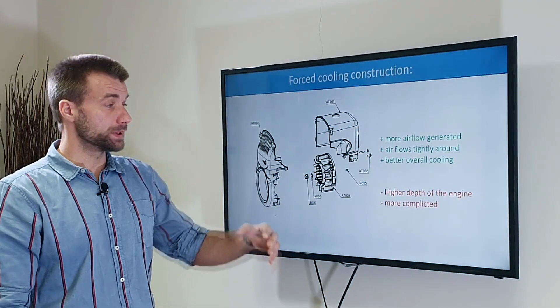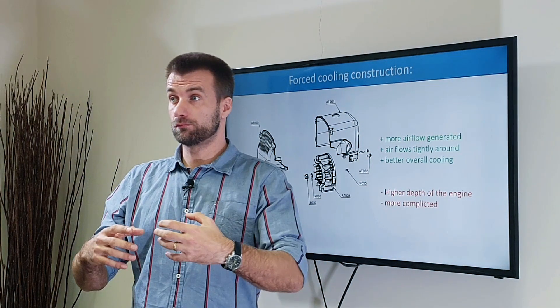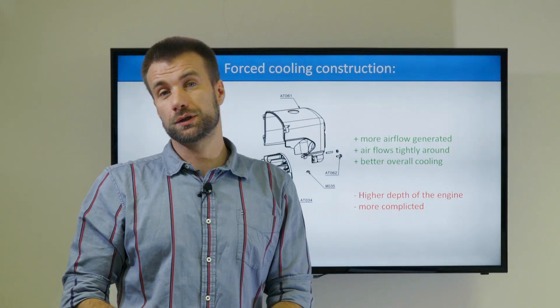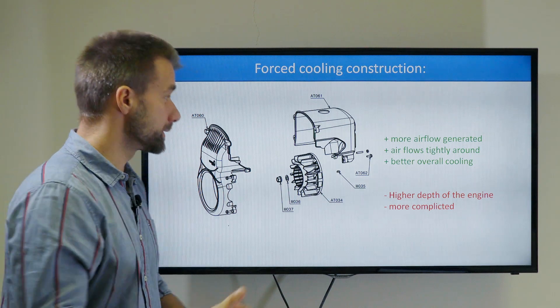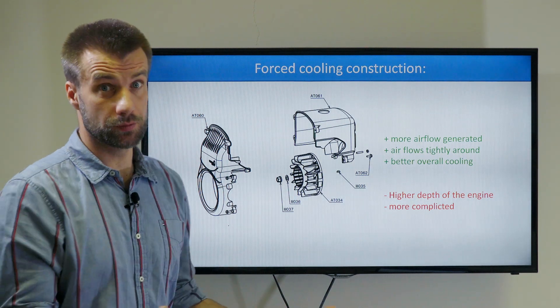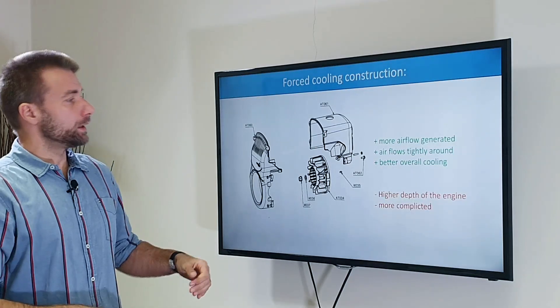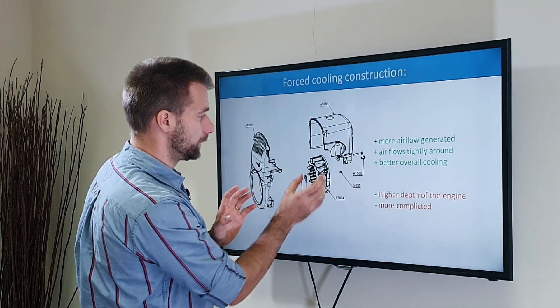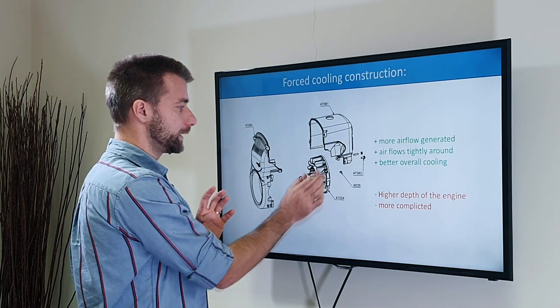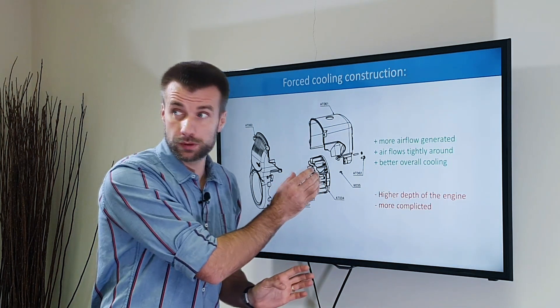So it's basically the same principle, just made better. Now what are the disadvantages? Complexity, it's more complex, more parts, more things to break eventually. And the major problem is that it's just deeper because you have the engine and then you add an additional fan which has some depth. It's pretty big, so the overall depth of the engine increases and the engine becomes more bulky.